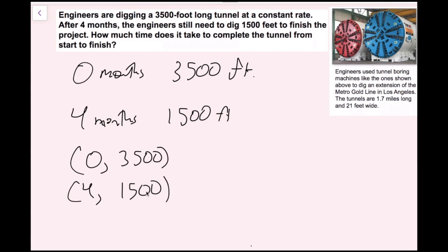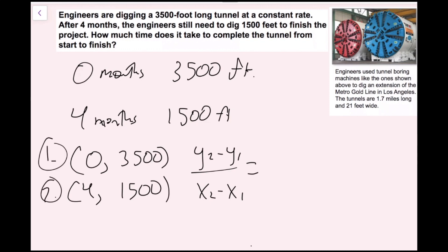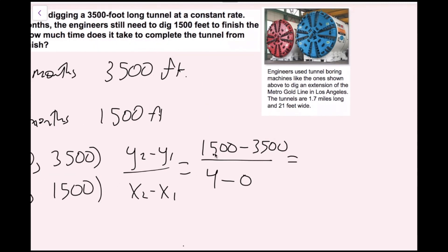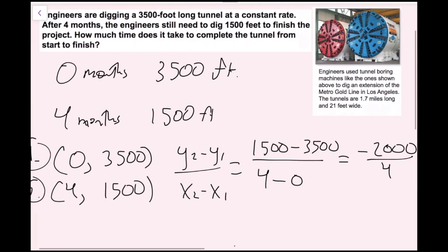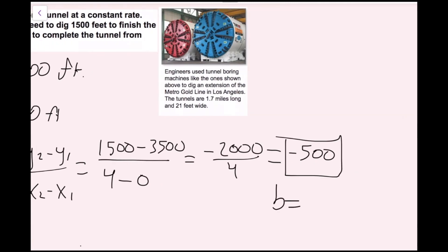I can find the slope here. My slope is change in y over change in x, which is y2 minus y1 over x2 minus x1. I'll call (0, 3500) point number one and (4, 1500) point number two. So I'm going to do 1,500 minus 3,500 over 4 minus 0, which simplifies to negative 2,000 over 4, which equals negative 500. My slope is negative 500. This ordered pair (0, 3500) is acting as my y-intercept, so b equals 3,500.